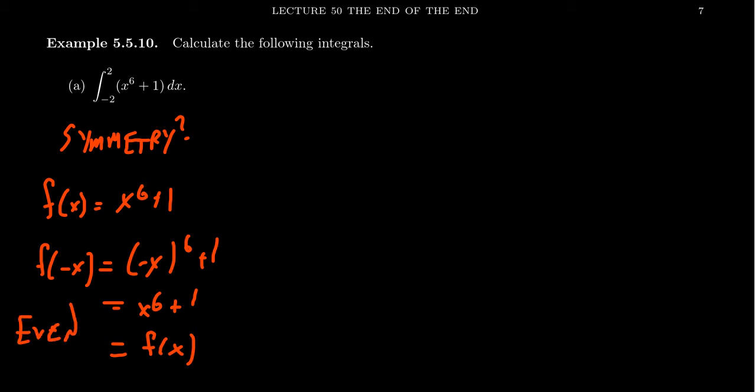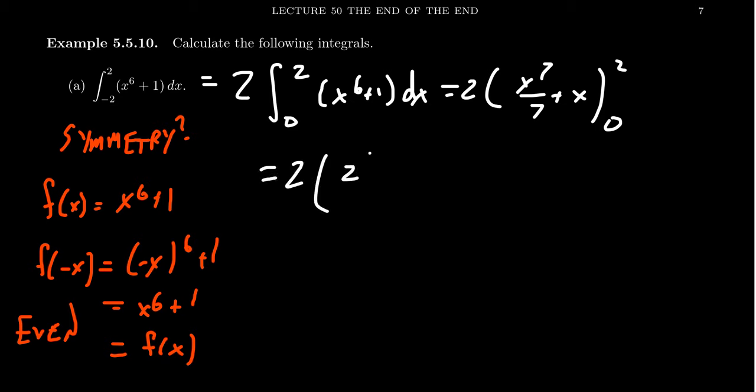The reason we call it even function is if you look at all the powers of x, you have only even powers. Six is an even number. The one is x to the zero, which is an even power as well. So this is an even function. By the integral of even symmetric functions we saw before, this will equal two times the integral from zero to two of x to the sixth plus one dx. We do still have to calculate an antiderivative, which that antiderivative will look like x to the seventh over seven plus x, evaluated from zero to two. When we plug in the two, we get two times two to the seventh over seven plus two. But then when we plug in the zero, we get zero to the seventh over seven plus zero. You'll notice that this last term, everything just goes to zero.